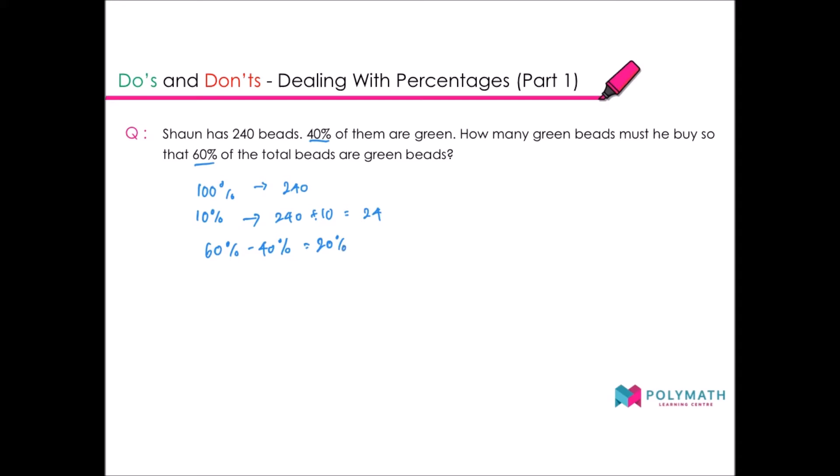Now you find 60% minus 40%, that gives you 20%. So you need to increase the number of green beads by 20%. Then 20% is simply 24 times 2, which equals 48. And I can tell you that this answer is absolutely wrong. This is the wrong method.